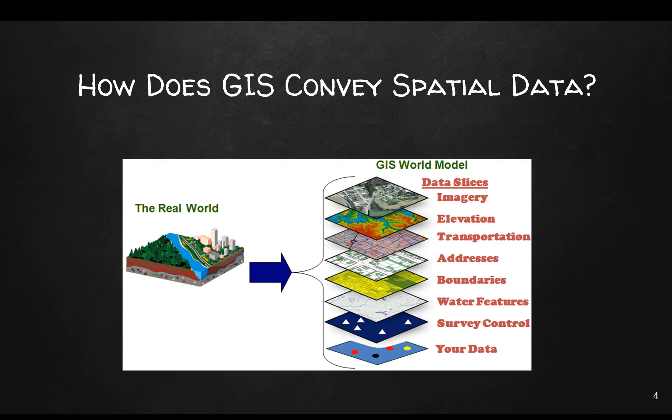So how do maps convey geographic or spatial data? GIS conceptualizes the world as a set of layers. Each layer has a theme — for example, the top layer might be imagery, then elevation, transportation, addresses, boundaries, and so forth. Layers are the mechanism used to display geographic data sets in GIS, and you'll learn all about this as we go through the lab assignments.